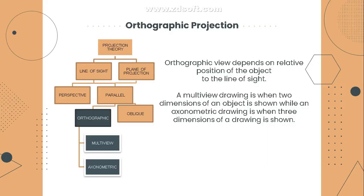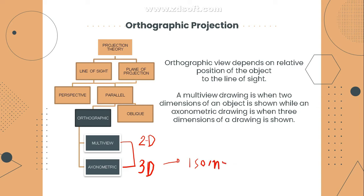There are two kinds of orthographic drawing: multi-view and axonometric. The difference is that multi-view drawings are two-dimensional — all views (top, front, right side, back) are in multi-view. Axonometric is usually a 3D drawing. In axonometric, what we commonly use is the isometric drawing, which is three-dimensional, so you can already imagine what the material actually looks like.